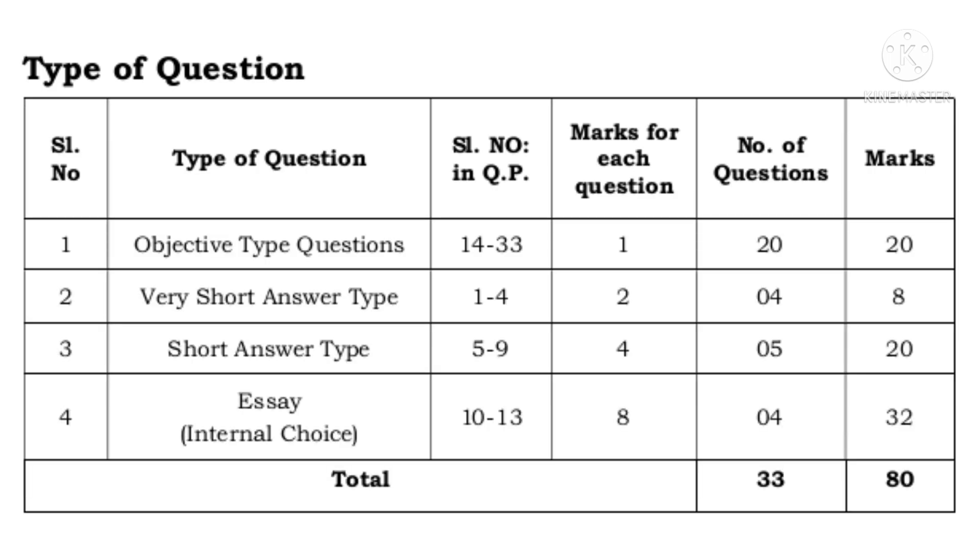First, objective type questions are from question number 14 to 33. Each carries 1 mark, there are 20 bits, so 20 into 1 mark is 20 marks.